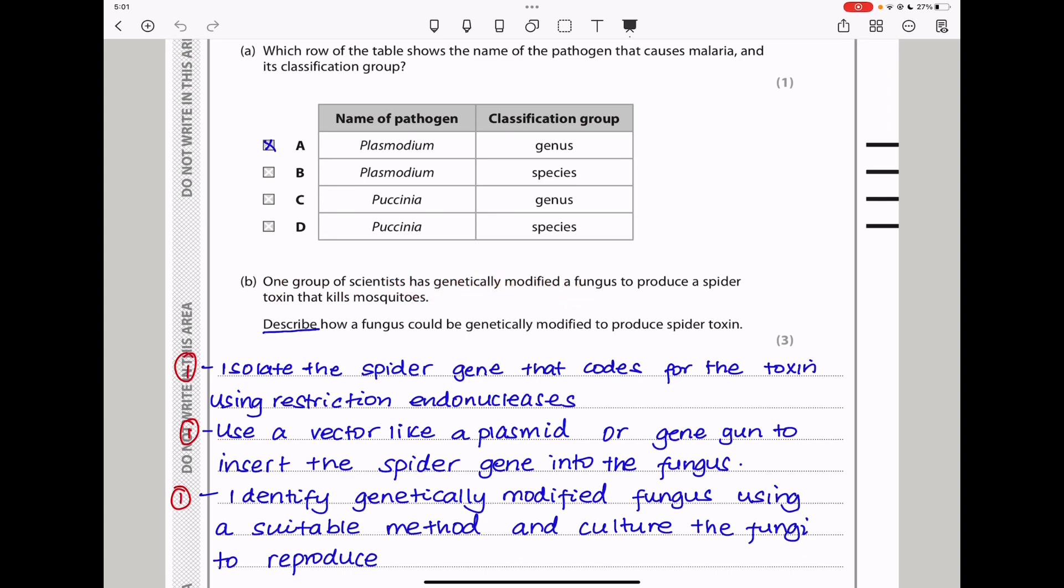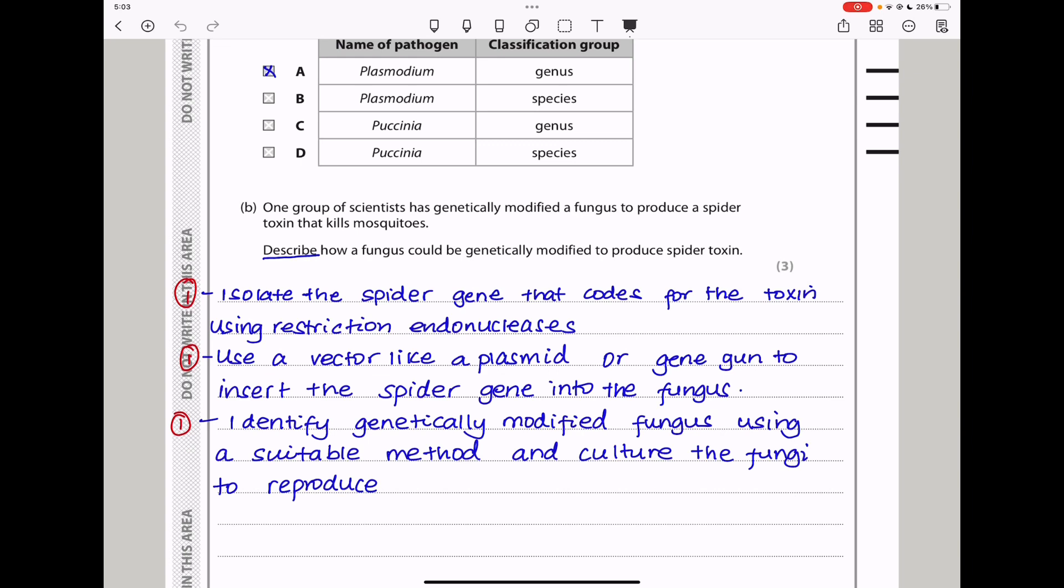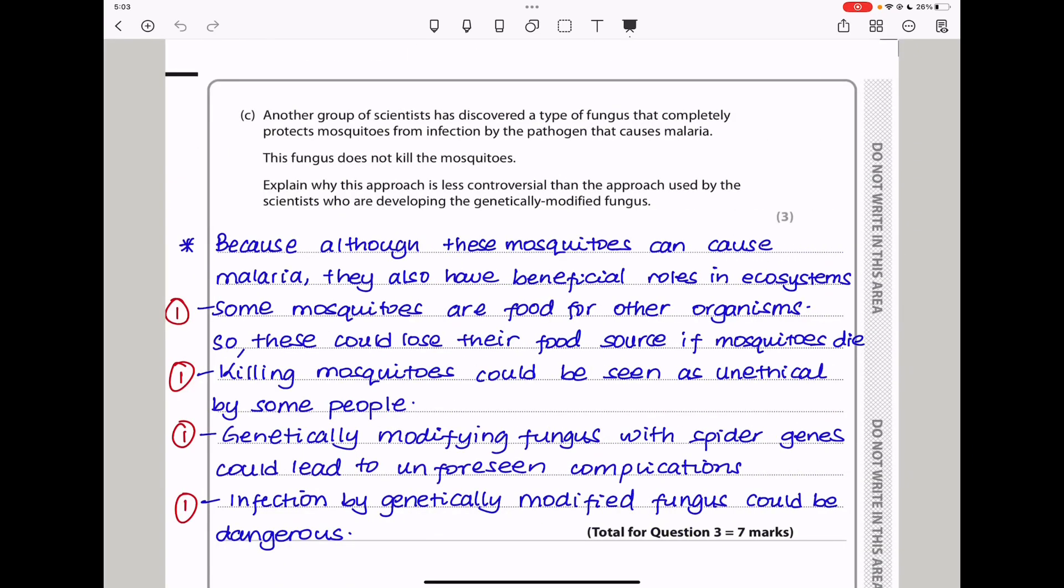For part B they say one group of scientists has genetically modified a fungus to produce a spider toxin that kills mosquitoes. Describe how a fungus could be genetically modified to produce spider toxin. They need to first find the spider and isolate the genes responsible for producing this toxin, and then they can find ways of introducing those genes into the fungus. Isolate the spider gene that codes for the toxin using restriction endonucleases that are going to cut the genes out of the DNA of the spider. Then use a vector like a plasmid or a gene gun to insert the spider genes into the fungus. Identify the genetically modified fungus using a suitable method, and then culture the fungi in order to reproduce and increase in number.